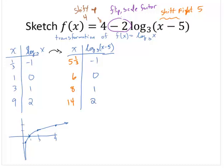Now let's deal with the scale factor. So now we have our new x and log₃(x - 5). Well wait, now we want the -2log₃(x - 5). So we have our new inputs, 5 and 1/3, 6, 8, and 14. And now we're going to scale our outputs by multiplying them by -2.